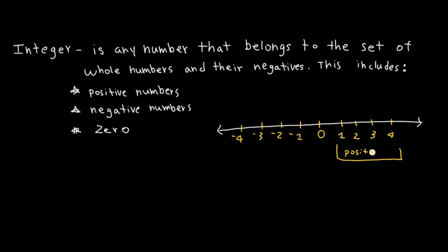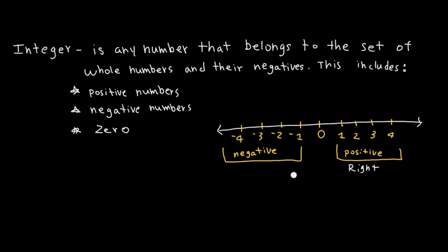These numbers are positive numbers. And these, which have a minus sign or a negative sign, are negative numbers. A tip to not confuse positive and negative numbers: remember that positive numbers are on the right side of 0, and negative numbers are on the left side of 0.